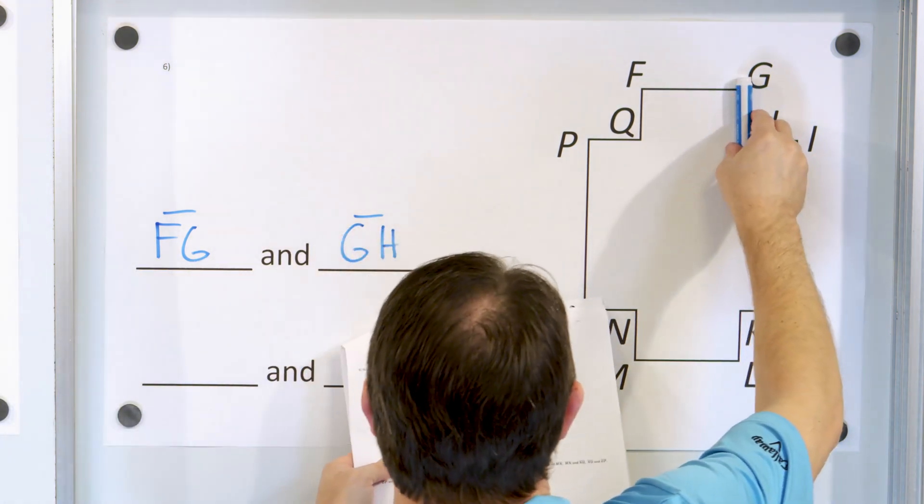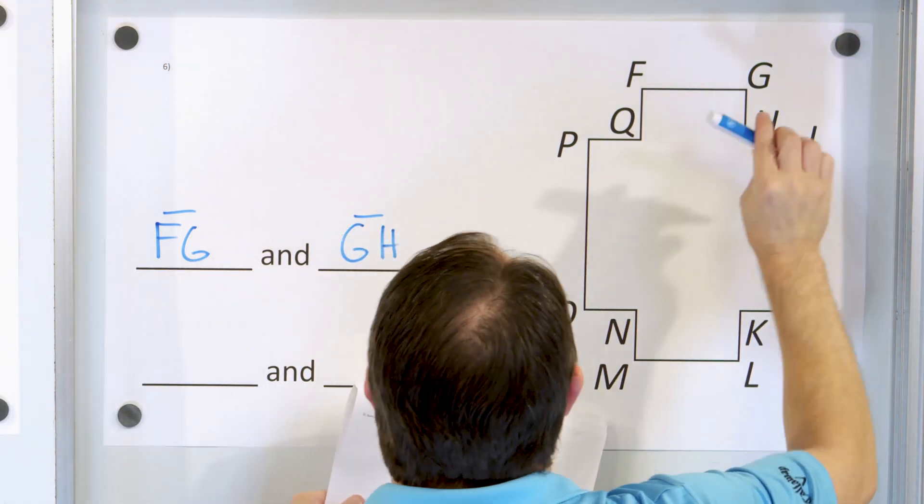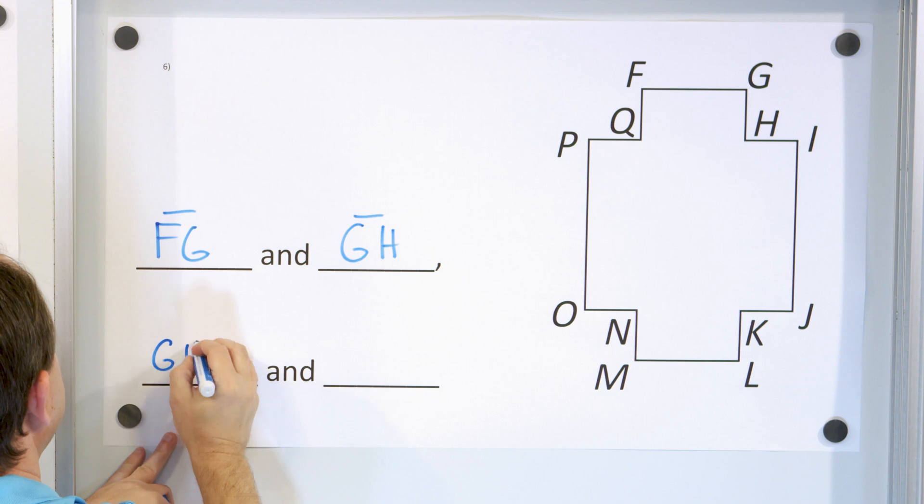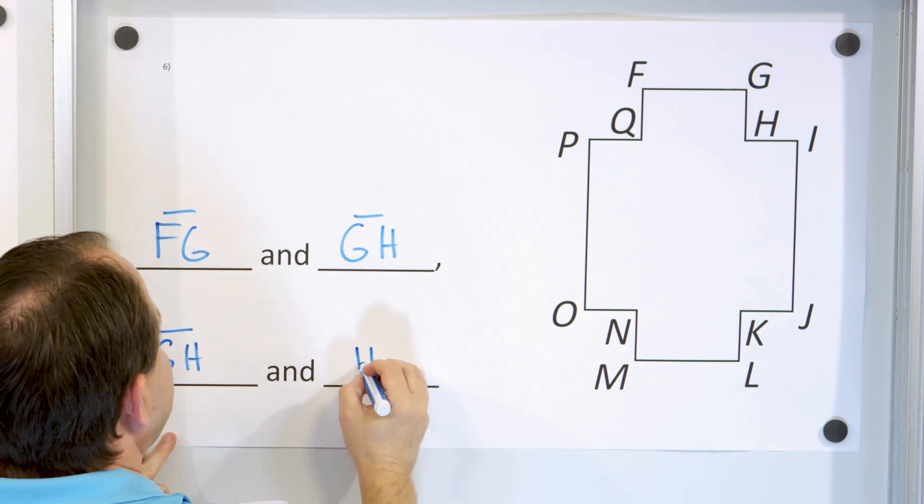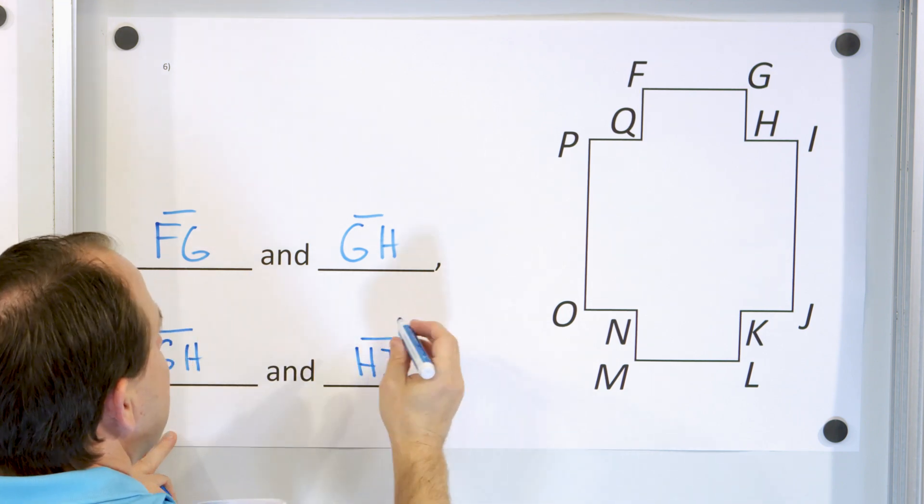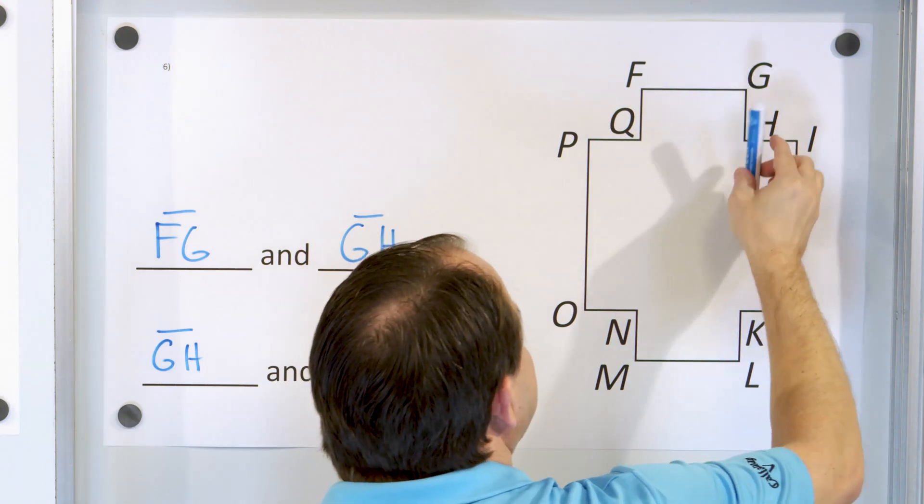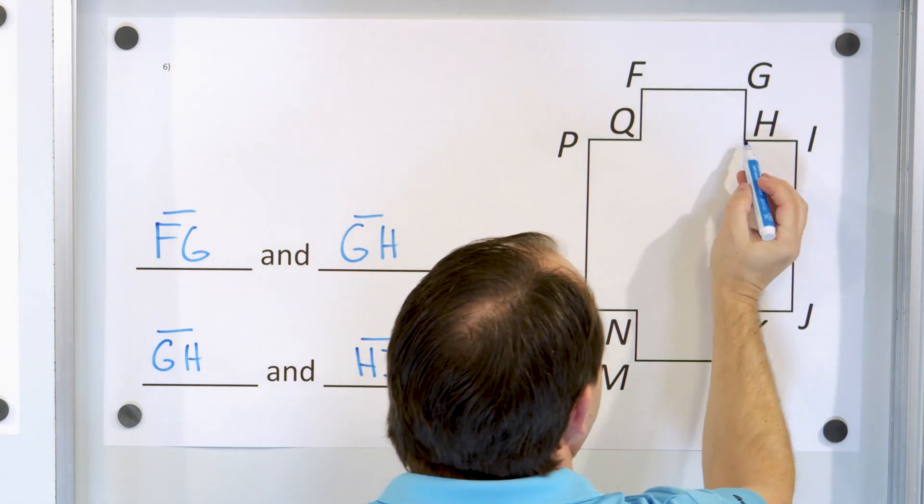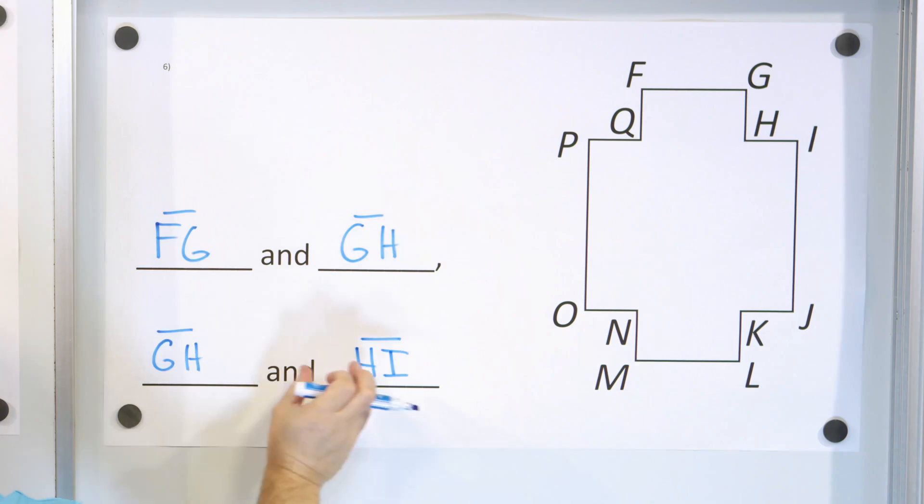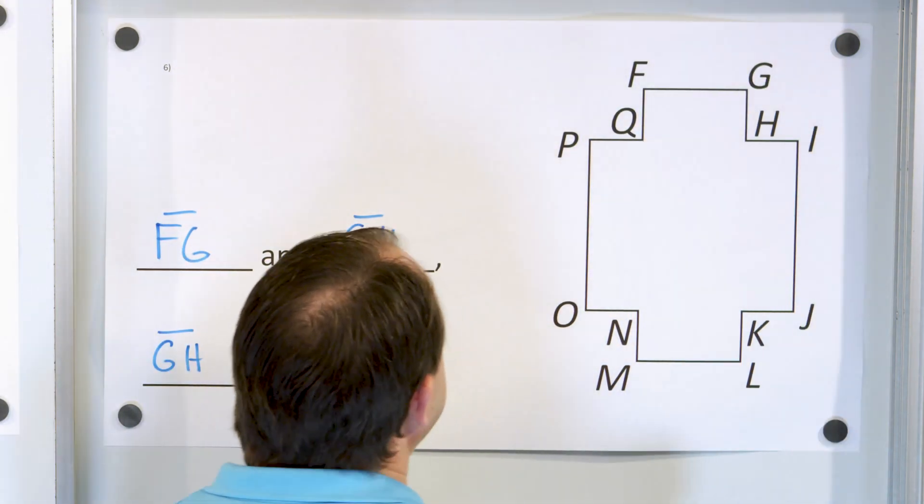What is another answer? We know that GH intersects with HI. So GH and HI. Let's make sure this makes sense. GH is this segment right here intersects with HI. This segment here, GH HI, that's right. And FG, GH. So that's all correct.